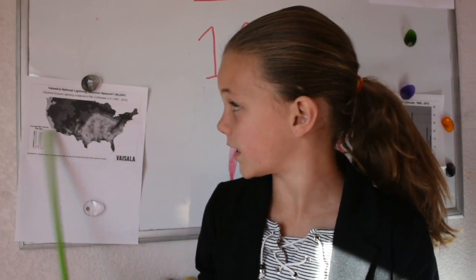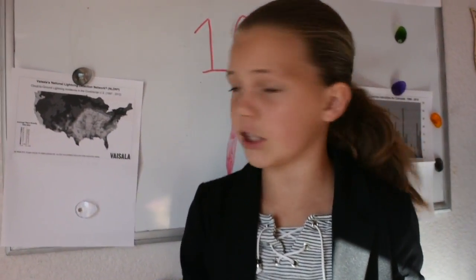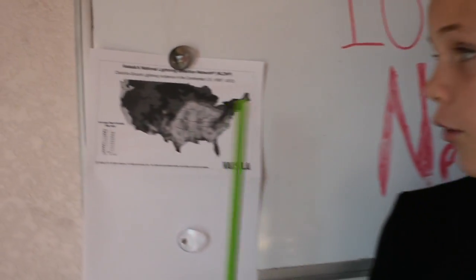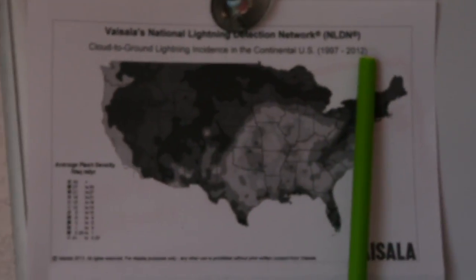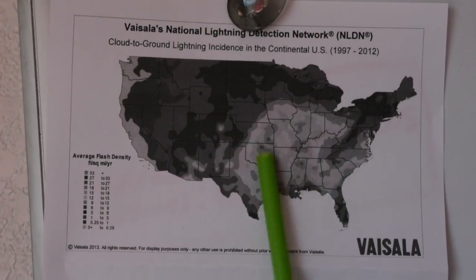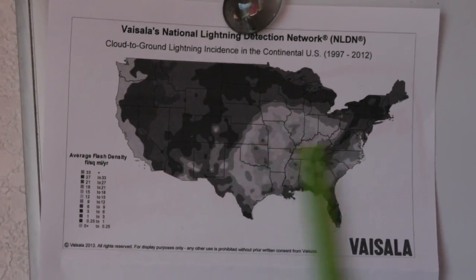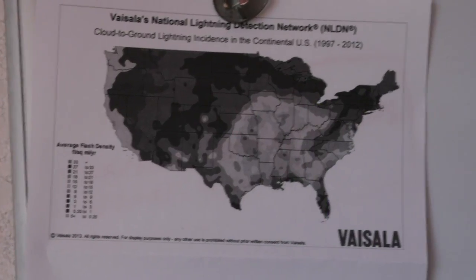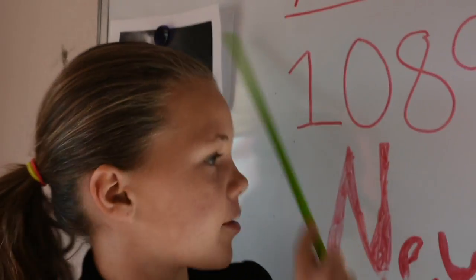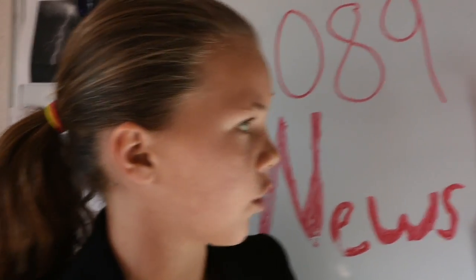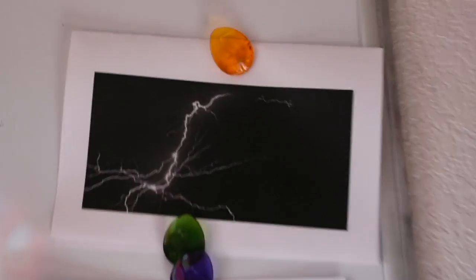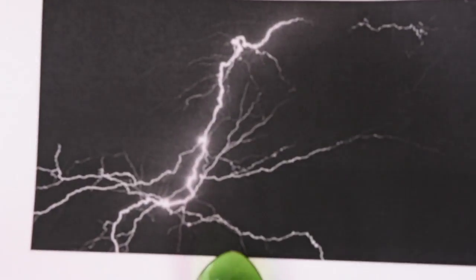This weather map shows the cloud-to-ground lightning incidents in the continental US ranging from 1997 to 2012. All this white right here is where the most cloud-to-ground lightning incidents occur in that time range. These two pictures behind me are pictures of some of our much larger lightning storms in Colorado. We might be experiencing some things like this tonight. Stay prepared and have a nice night.